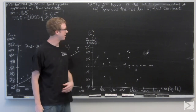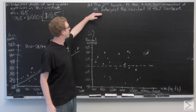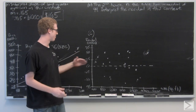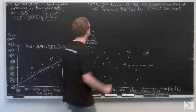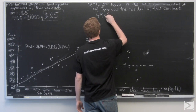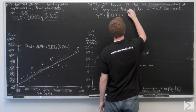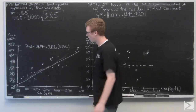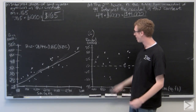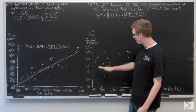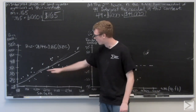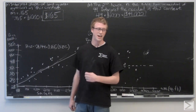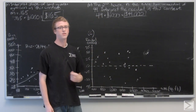Part B tells us that the second house in the table — a house with a pool — has a residual of 49, and it asks us to interpret the residual in the context of this problem. Again, 49 is a residual but it's in thousands, so we need to multiply that out by 1,000. With a residual value of 49, that means it's 49 above what the model would have predicted. So this positive residual of 49 means that the customer paid $49,000 more for the house than the model predicted.